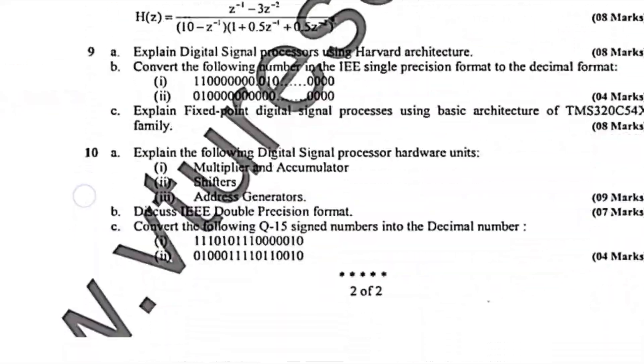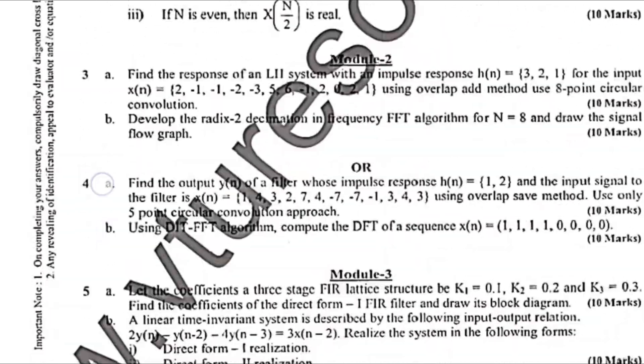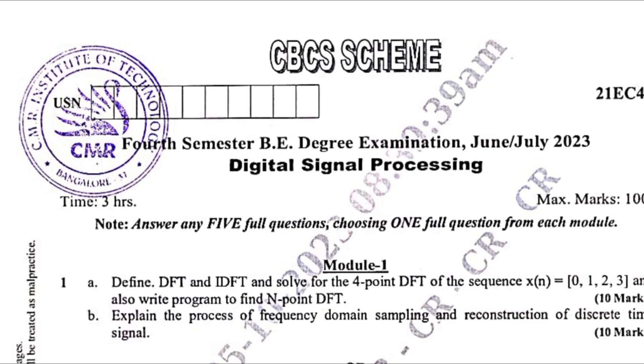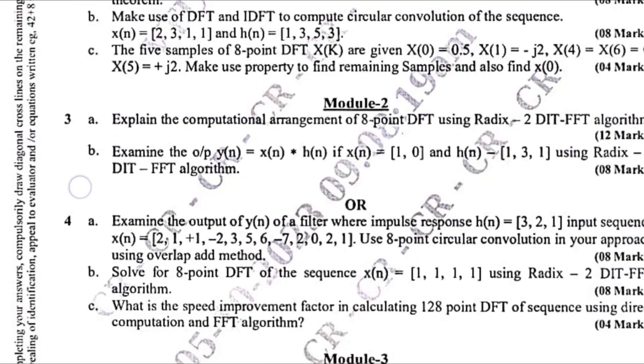These are the question papers. And also including 21 scheme paper, I have included this, that is digital signal processing. This is the 18 scheme papers. Almost syllabus is same, but only one module is different. This is your 21 EC4 to. You can also refer this one.